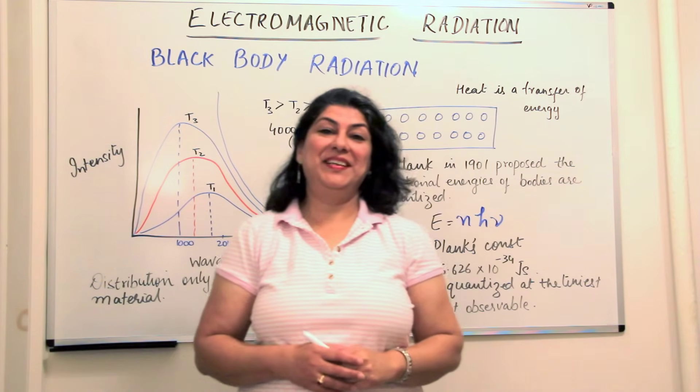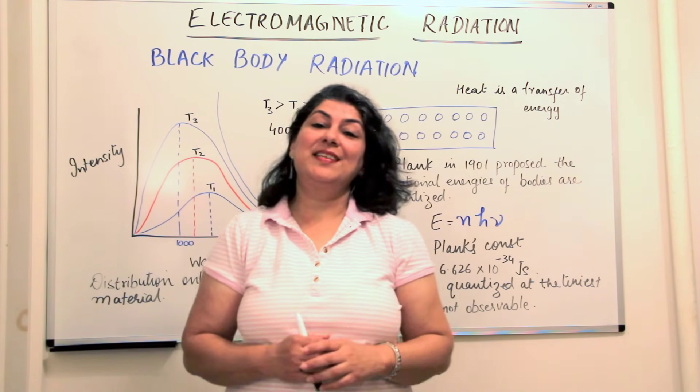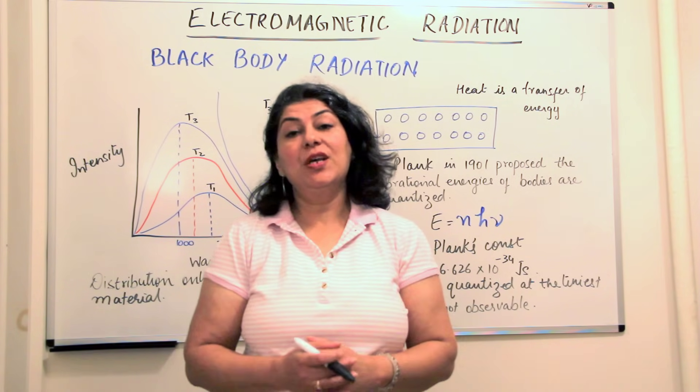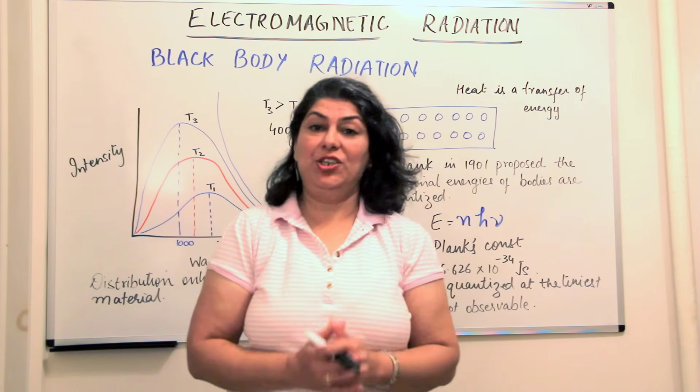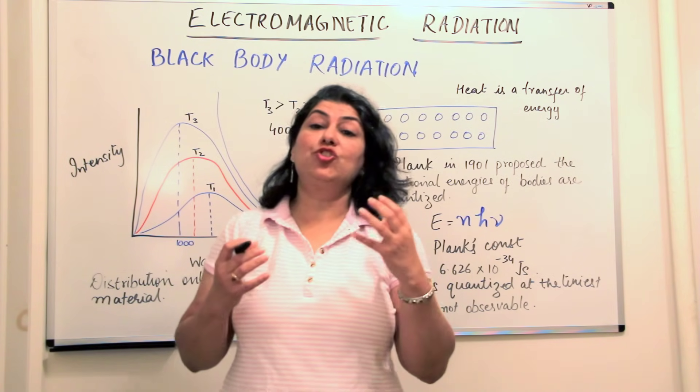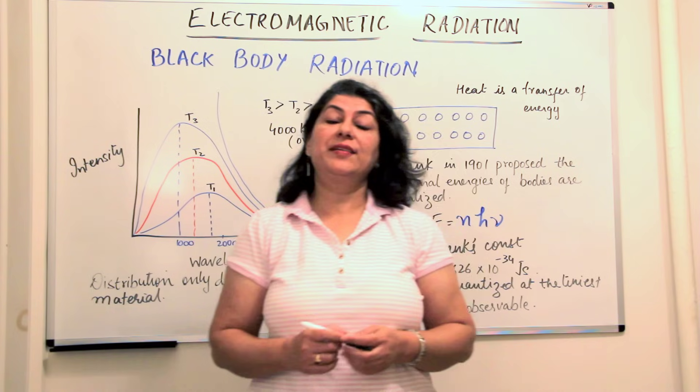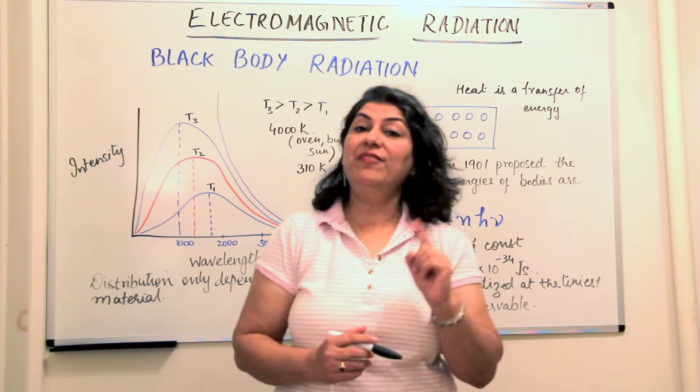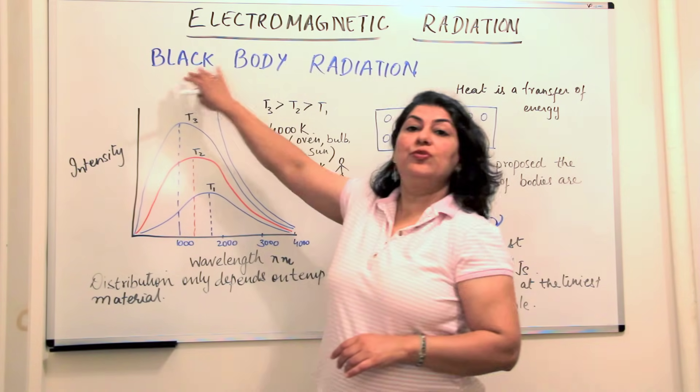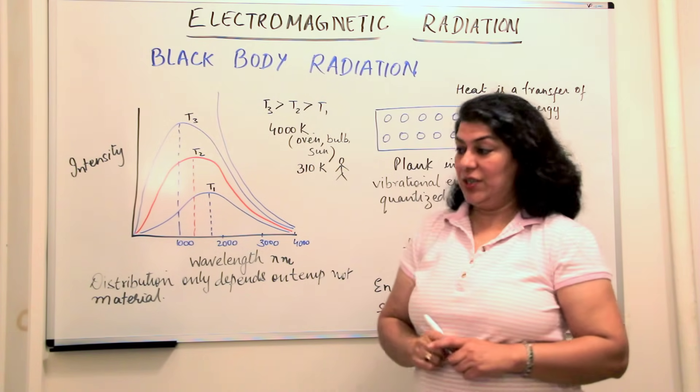Hello, thank you for returning. We have been discussing in the previous videos why electromagnetic radiations were considered to have dual nature. What findings led scientists to believe that electromagnetic radiations did not just have wave-like nature, they had particle nature too. In this video we are going to discuss the black body radiation.